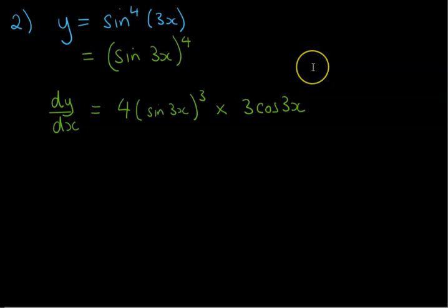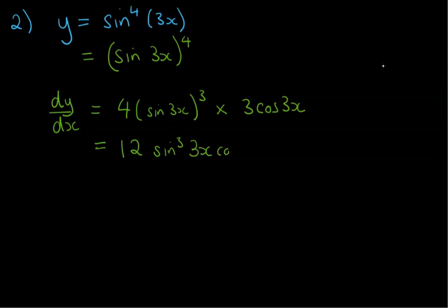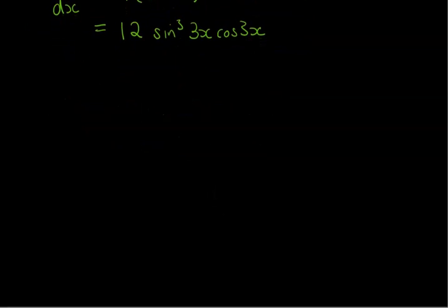Okay, so again, if you're doing this for the exam, you just stop right there. The only way we could really tidy this up anyway is to remove the brackets. So if we were to tidy this up, we would go to 12 sine cubed 3x cos 3x. All right, we'll just do one more for luck.